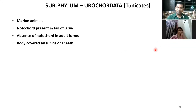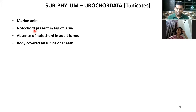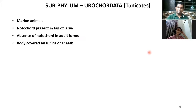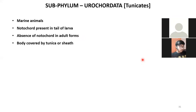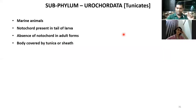Classification is always from an evolution point of view. Urochordata are placed under Chordata because Chordata must have a notochord at least in some stage of life. In these animals, the notochord is present only in the tail of the larva, but when the larva becomes an adult, the notochord is lost. They are all marine animals. They are called tunicates because their body is covered by a protective sheet called a tunic.